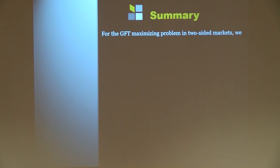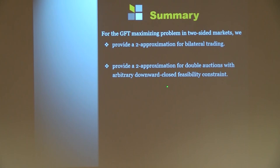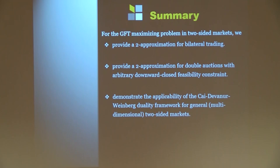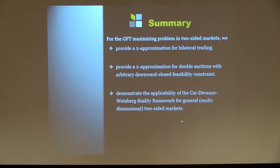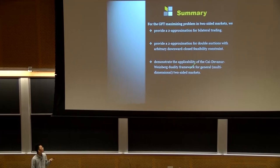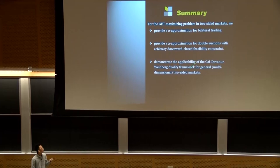In summary, we show a two-approximation result — achieving half the optimal gains from trade — for bilateral trading and for double auctions with arbitrary downward-closed feasibility constraints. We also use the Lagrangian duality framework to derive a benchmark applicable to multi-dimensional markets, and we hope these techniques can help achieve approximation results in multi-dimensional settings as well. Thank you.